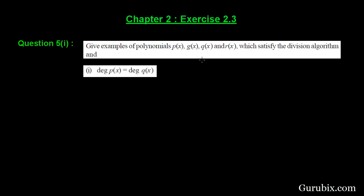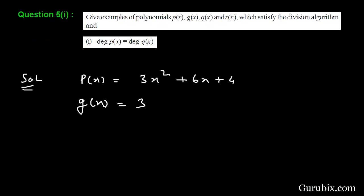We have to give examples of the polynomials p(x), g(x), q(x), and r(x). First, let the polynomial p(x) = 3x² + 6x + 4, and let g(x) = 3. Therefore, q(x) will be x² + 2x + 4/3.